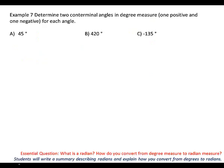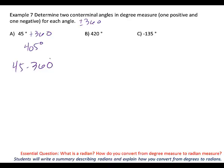We're going to determine two coterminal angles in degree measure — one positive and one negative for each angle. Instead of adding 2π, how many degrees is once around the circle? 360. So, we're going to add and subtract 360. I'm going to add 360 to this one. What's 45 plus 360? 405 degrees would be my positive. To get a negative, I subtract 360 — and when I subtract 360, what do we get? Negative 315 degrees.